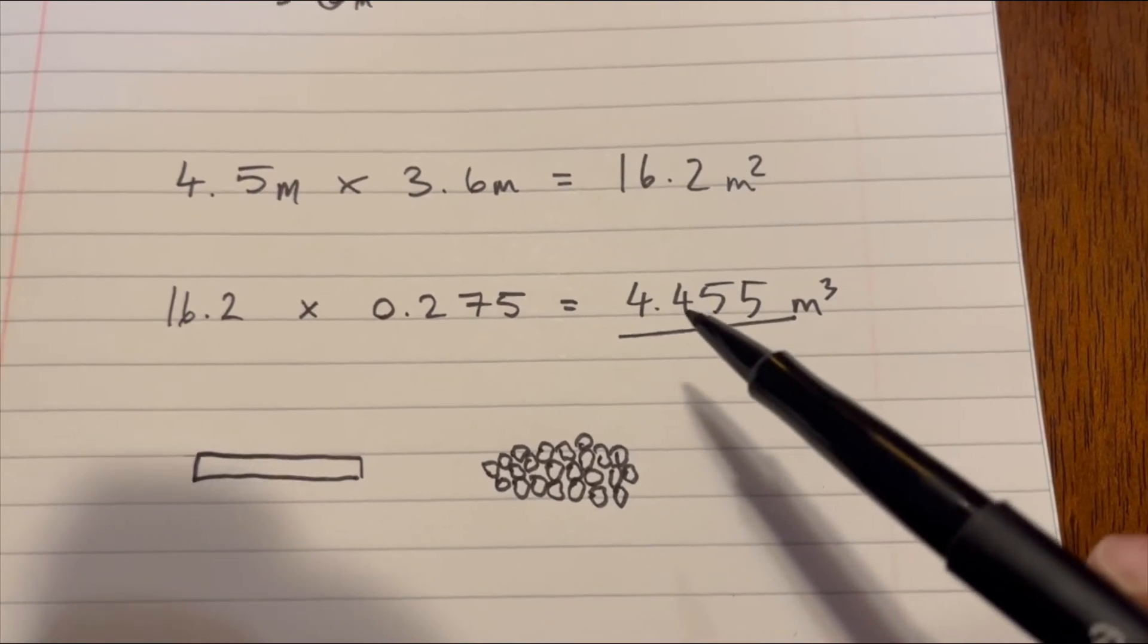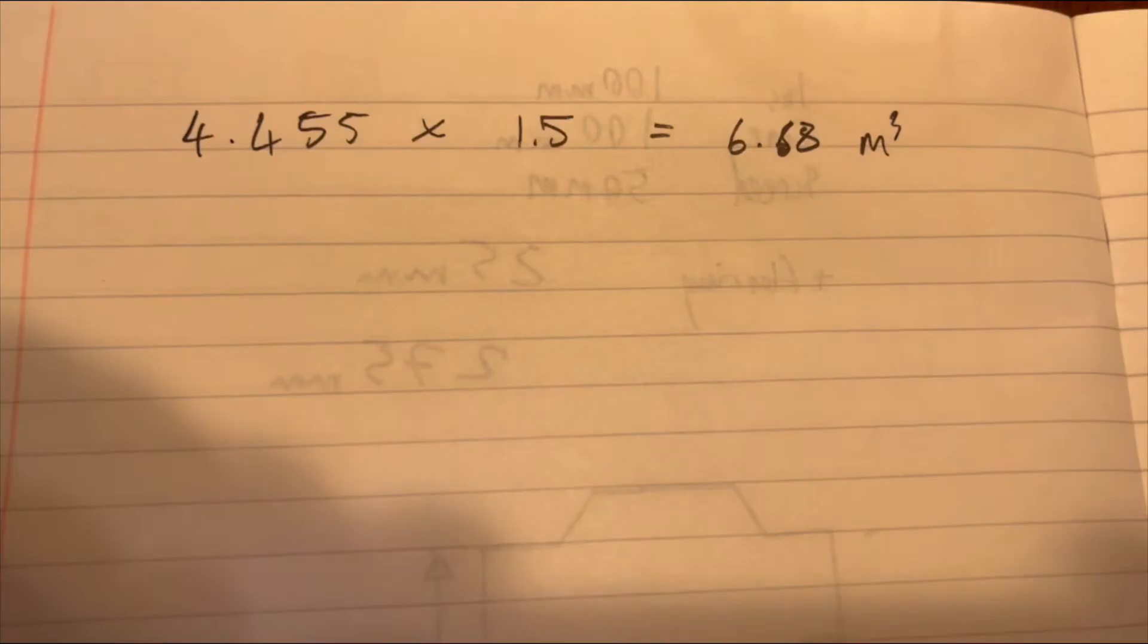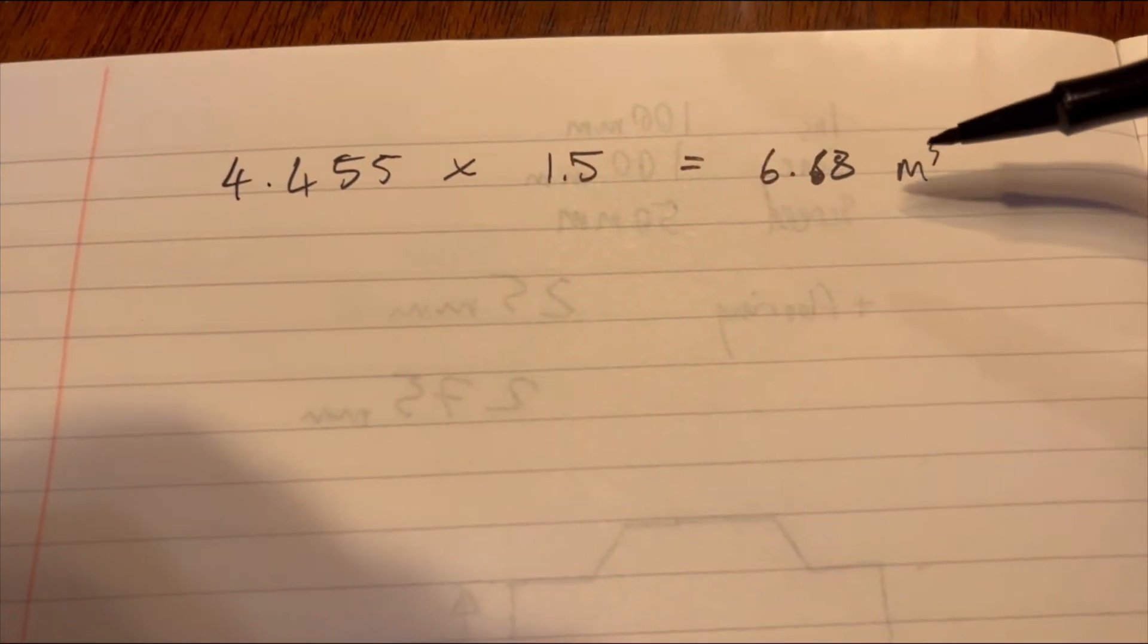If it's soil, that's a good rule to go by. It should be about the same for concrete too. So if you times those together, it's going to be about 6.68 meters cubed.